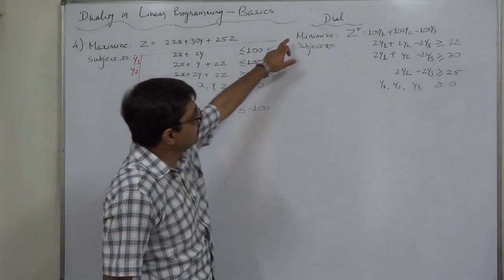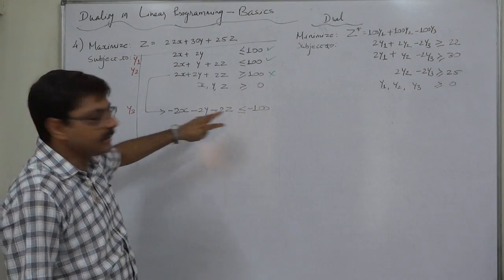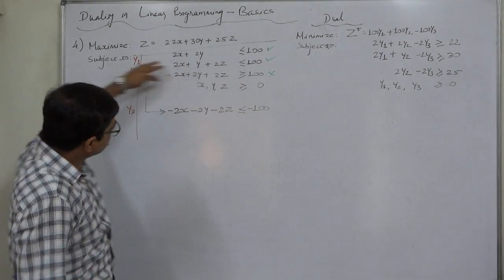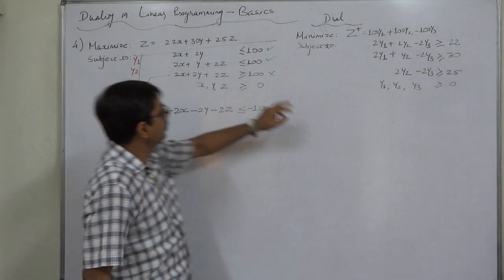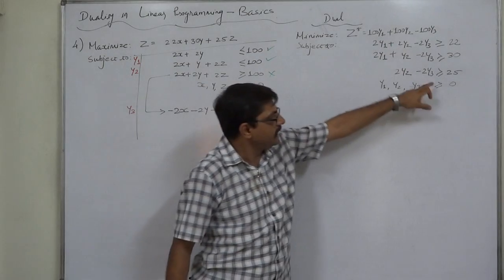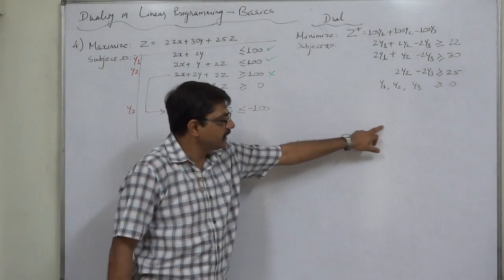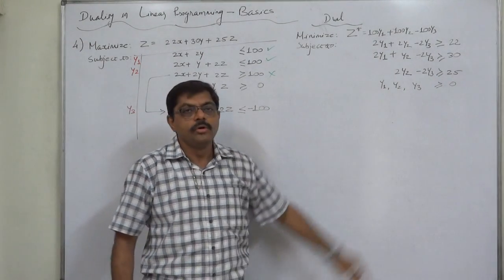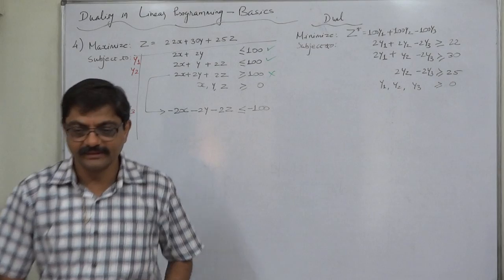Let us verify: against maximization, the dual objective is minimization. There are 3 decision variables in the primal and 3 constraints in the dual; there are 3 constraints in the primal and 3 decision variables in the dual. All constraints are less than or equal to in the primal and greater than or equal to in the dual. There is no equality, so no unrestricted variable. That's it — thank you.